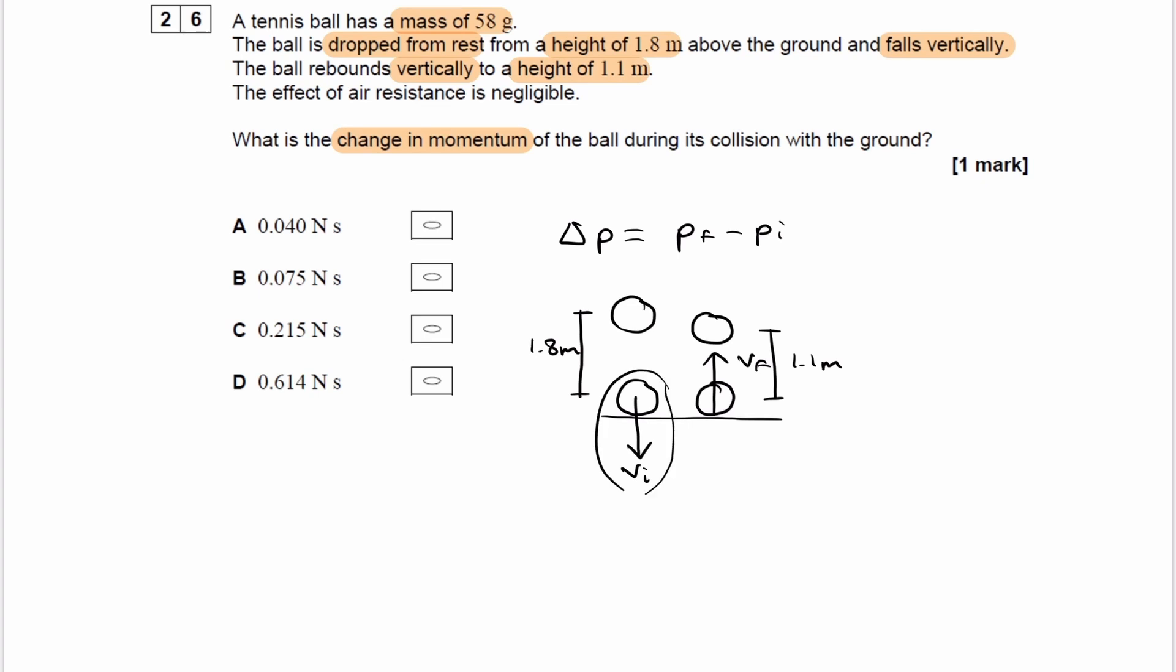So if we know what these two velocities are, vi and vf, we can work out what the initial and final momentum would be before and after the ball hits the ground. And once we have those two things, we can then work out the change in momentum. Remember that momentum is mass times velocity. So that's how we're going to convert these two velocities into momentum. So how do we work out vi and vf? We can use SUVAT.